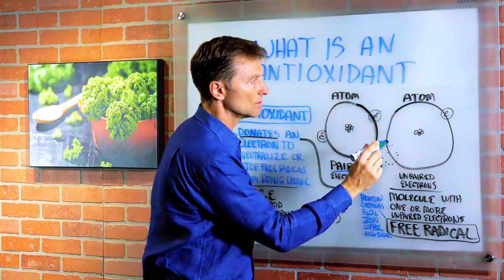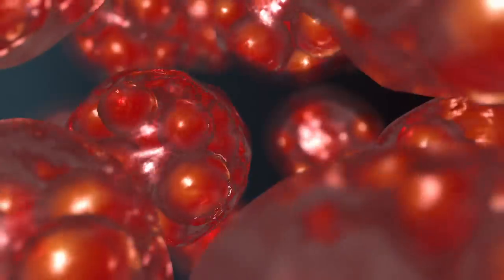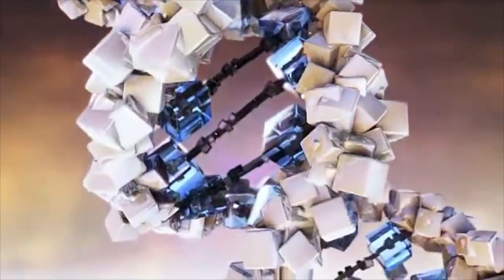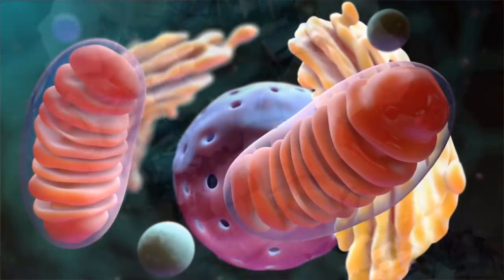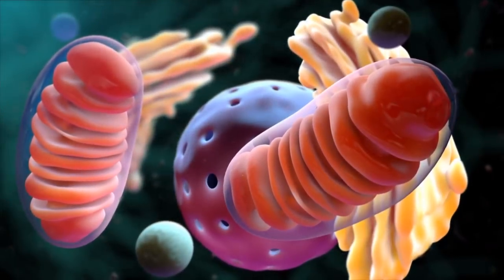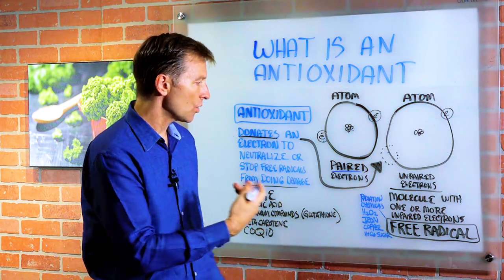So free radicals create damage on our cells, the DNA, and the mitochondria. They create a lot of oxidation, just like you would get rust in a car — the same thing can happen in our bodies.